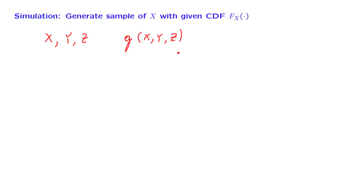So the question is: how can we generate a random sample of a random variable whose distribution is known? What we want is to create some kind of box that outputs numbers, and these numbers are random variables distributed according to a CDF that's given to us. How can we do it?